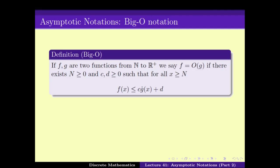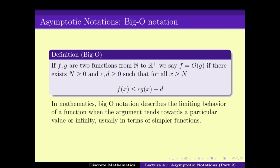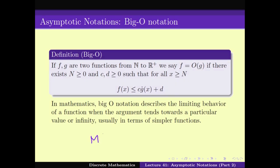You should get familiar with this notation because it is used all the time. In mathematics, Big O describes the limiting behavior of a function as the argument tends towards a particular value. With this in mind, the m(n) that we were computing earlier is O(n log n), because we have seen that m(n) is less than twice n log n for n greater than 5.